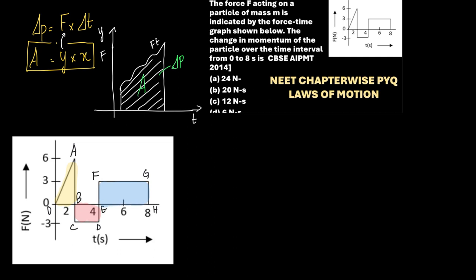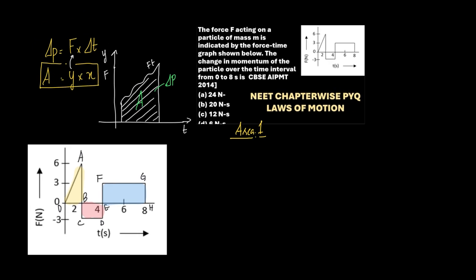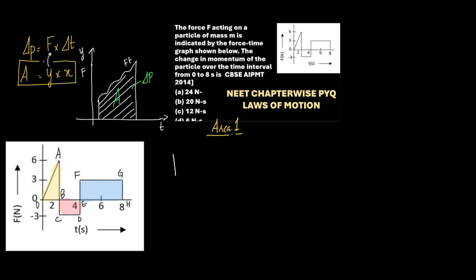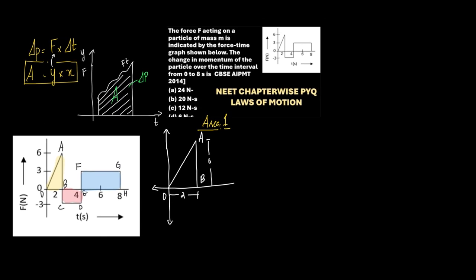Let us first find out area one. If you have confusion, practice drawing it a couple of times. We have O, A, and B. This distance is 2 and AB is zero to 6, which is 6. The area of triangle OAB is equal to half into 2 into 6, which is 6.